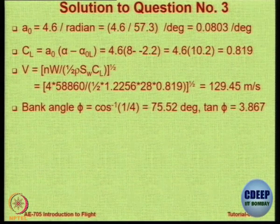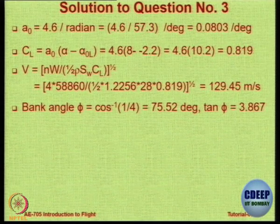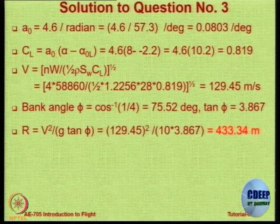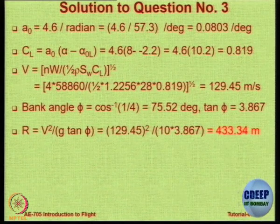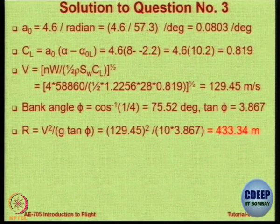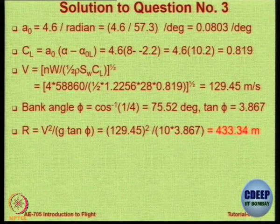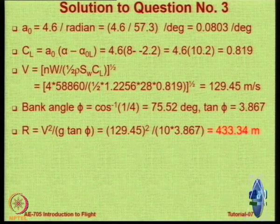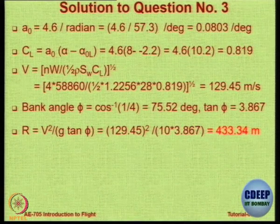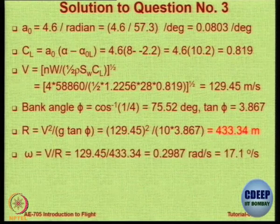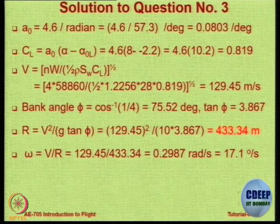With the radius of turn confirmed, the next step is time. We need omega = V/R. For 180 degrees, the time required is approximately 10.52 seconds, or almost 11 seconds — assuming the turn rate is constant, which it is for a steady level turn.